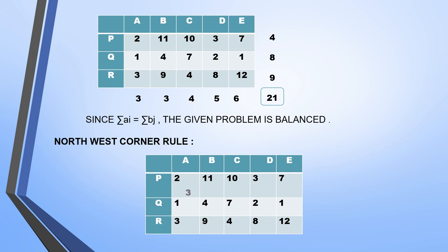We always start with the top-left cell. The supply along this cell is 4 and the demand is 3. Since demand has been completely met, we strike that entire column. The remaining supply is 4 minus 3, which equals 1, and the demand becomes 3 minus 3, which equals 0.